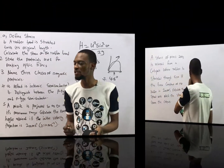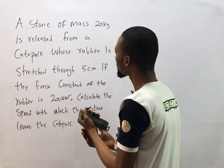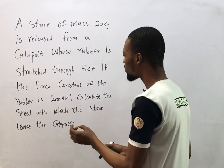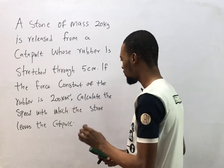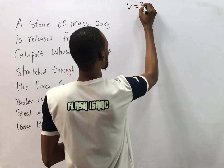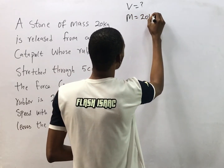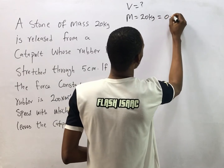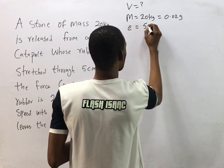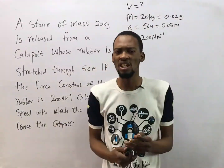A stone of mass 20 g is released from a catapult whose rubber is stretched through 5 cm. The force constant of the rubber is 200 N/m. Calculate the speed with which the stone leaves the catapult. Given: mass = 0.02 kg, extension = 5 cm = 0.05 m, force constant k = 200 N/m.